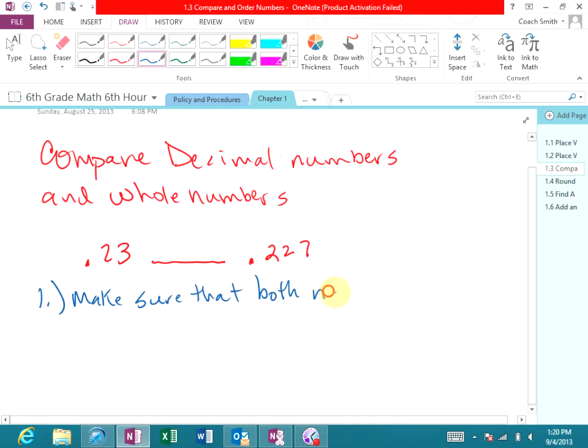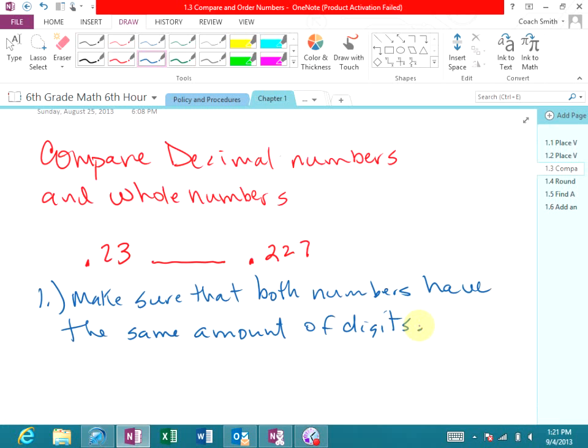Step one is make sure that both numbers have the same amount of digits. That's step one. Well, how many digits does the first number have? How many digits does 0.23 have? Britney, how many? Two. 0.23 has two digits. 0.227 has how many digits? Jacob, three.